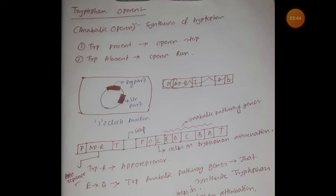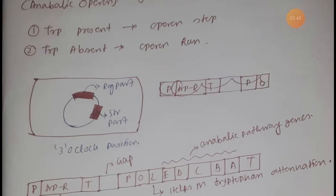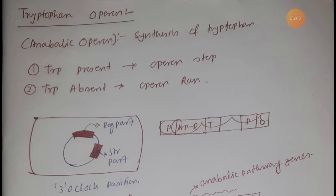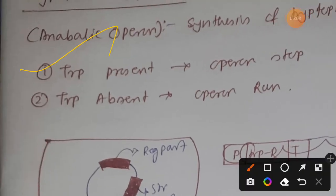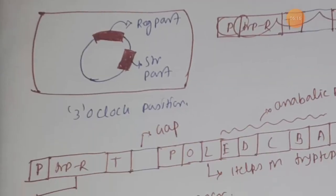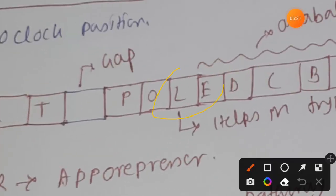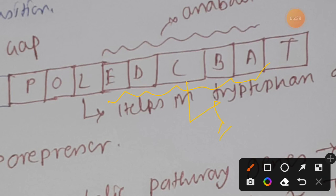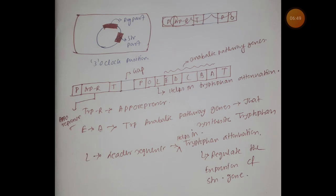So that is for today, friends. We have discussed tryptophan operon in a very introductory manner. We learned that it is an anabolic operon, and the orientation of the regulatory part and structural part in tryptophan operon is in a three o'clock position. When tryptophan is present in the cell, the operon will stop. When tryptophan is absent, the operon will start working. The leader sequence helps in tryptophan attenuation and regulates expression of the structural genes. From E to A are the anabolic pathway genes, and there is also a terminator.